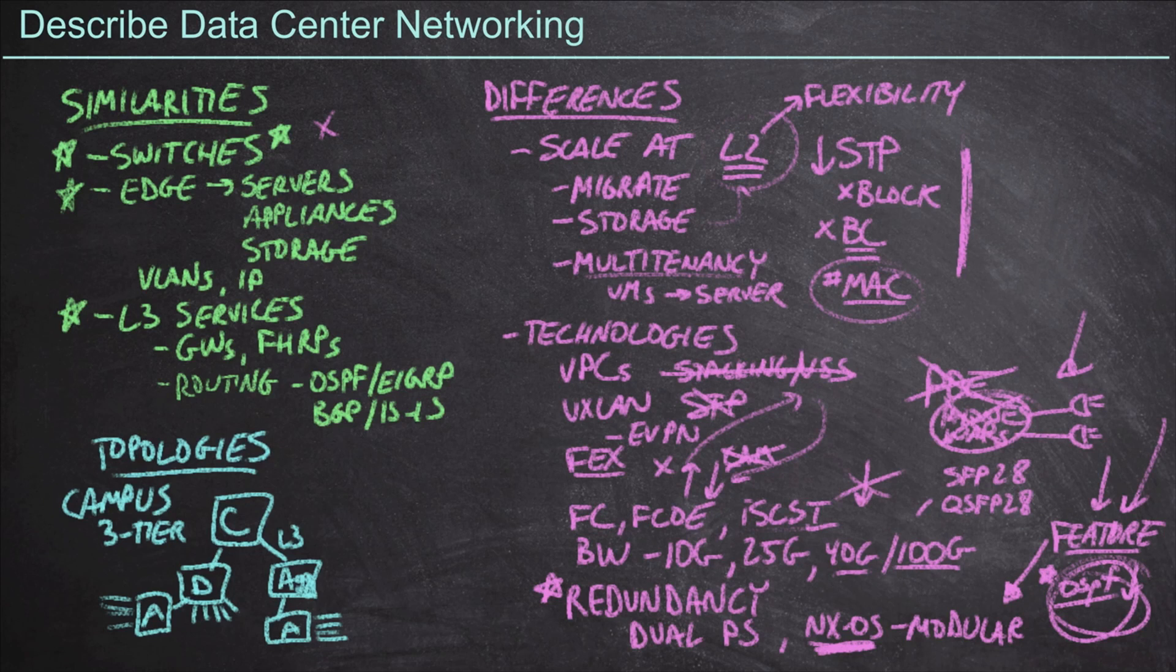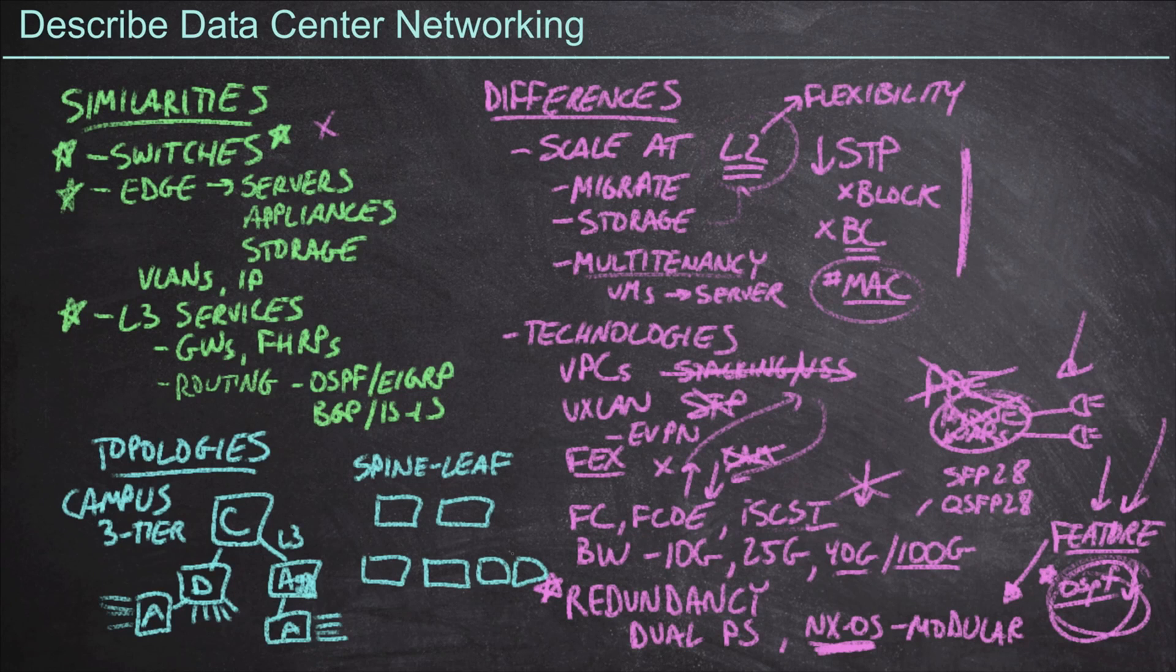However, there is a more modern way of deploying data centers. And that would be known as the spine leaf topology. At first glance, spine leaf is going to look a lot like our traditional architecture. Because for example, we could deploy two spine switches and then we're going to connect those down to leaf switches. So let's just say we've got four leaf switches in here. Now, one of the key differences is we're not going to connect our spine switches to other spine switches. Instead, spines connect to leaf switches and that's it. We're not connecting leaf switches to leaf switches either.